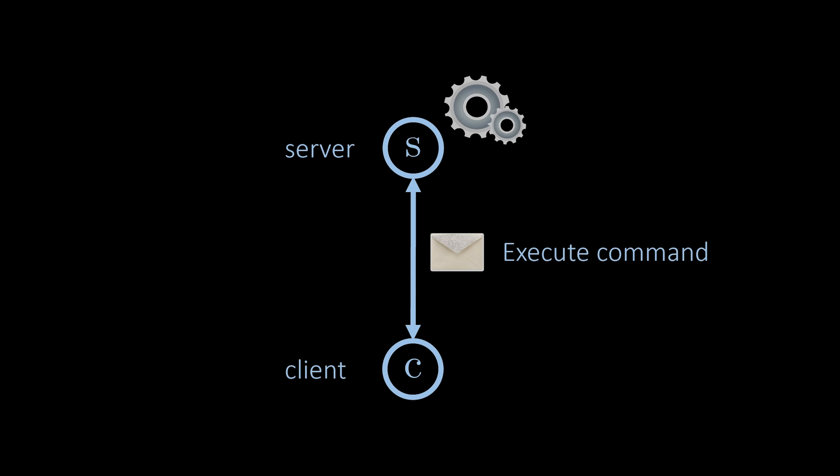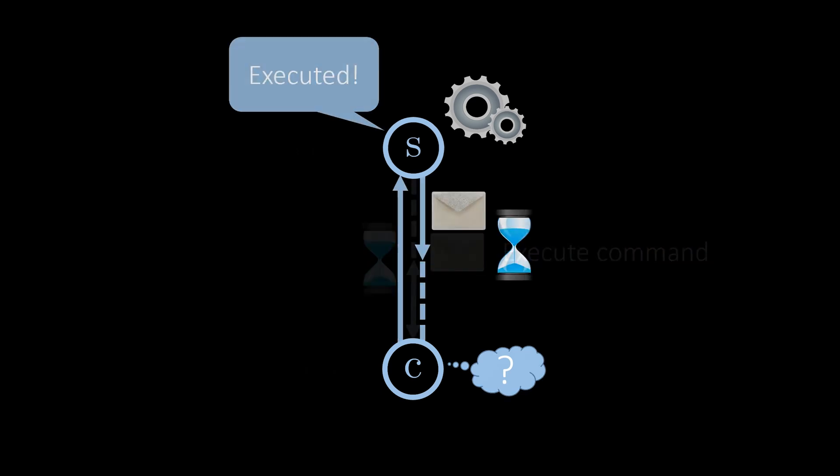For example, if we don't make any assumptions about the time it takes to deliver messages, a client cannot know whether its command has been executed. Maybe the command has not been executed because message delivery is exceptionally slow or it has already been executed and the response simply has not arrived at the client yet.